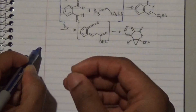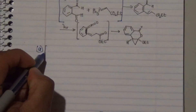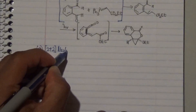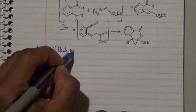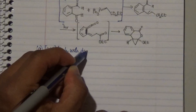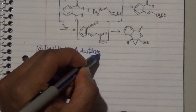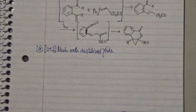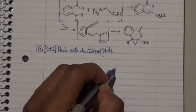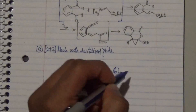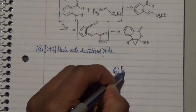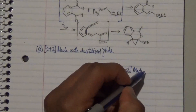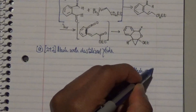We know that there are two mechanisms that lead to a four-membered ring intermediate. Mechanism A involves a [2+2] mechanism with a destabilized ylide, while mechanism B is also a [2+2] mechanism but with a stabilized ylide.